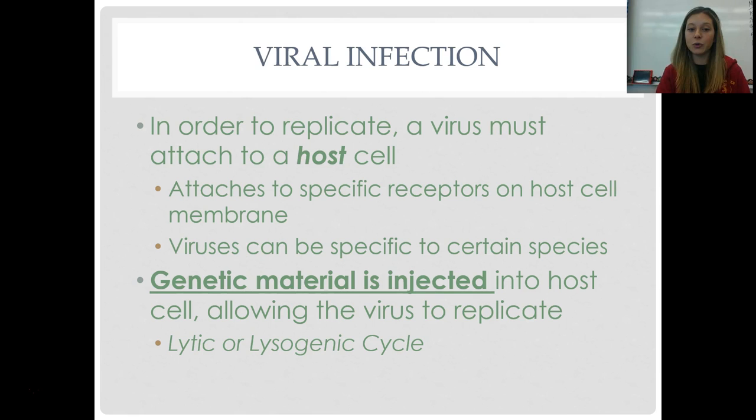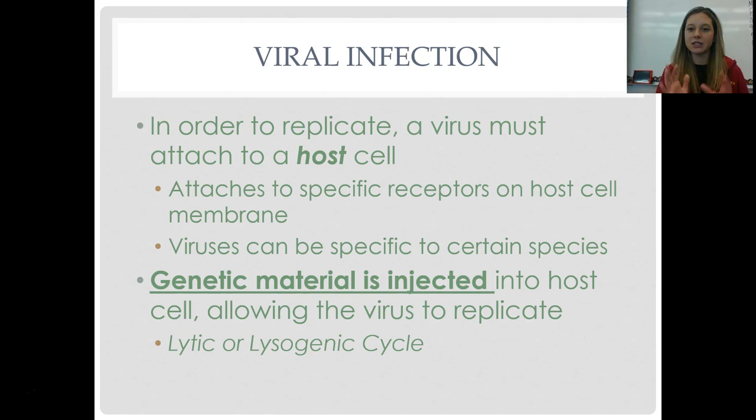Viruses can't reproduce on their own. To reproduce, they have to attach to a host cell first. They attach to specific receptors on the host cell's membrane and then inject their genetic material. This is why viruses are specific to certain species — they can only attach to certain receptors, and only certain organisms have those receptors on their cells. That's why a type of virus may only infect bats, or only infect humans.